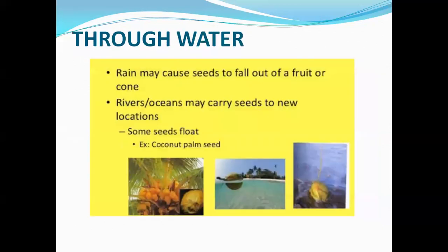Next is dispersal by water. The seeds of plants that grow in or near flowing water are generally dispersed by water. These seeds or fruits have special structures which help them to float on water. Coconut and lotus are examples of dispersal through water.